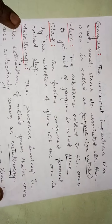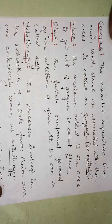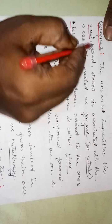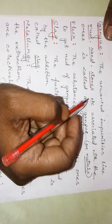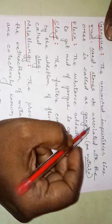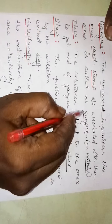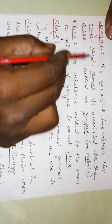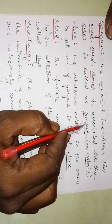What is gang? The unwanted impurities — like mud, sand, and stone — associated with the ore in the earth's crust are called gang. These earthly impurities associated with the ore are called gang, also termed as matrix.